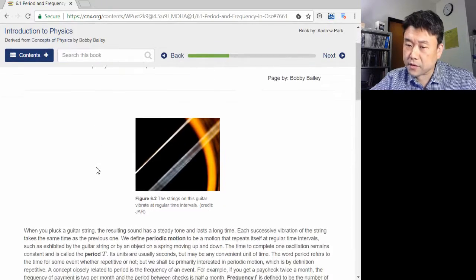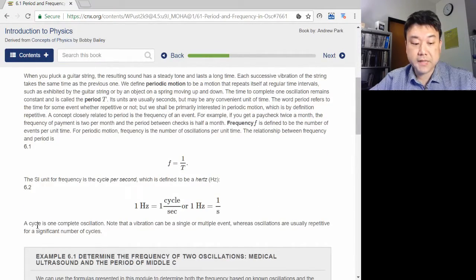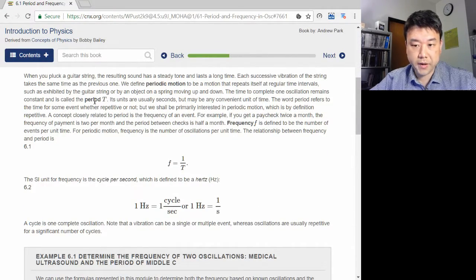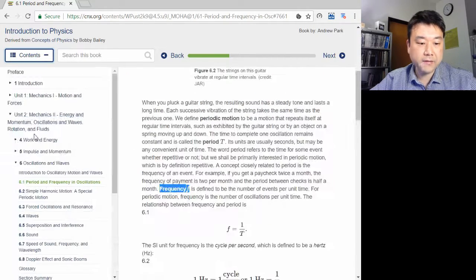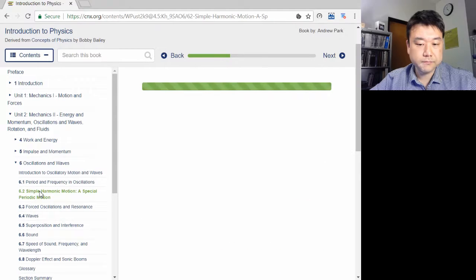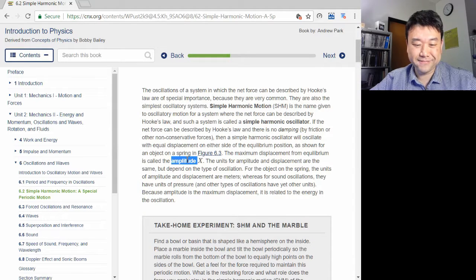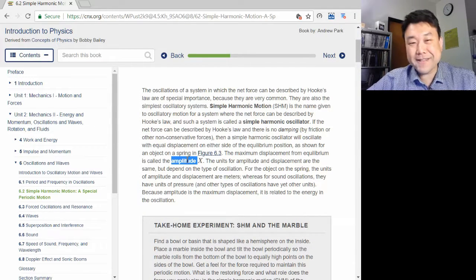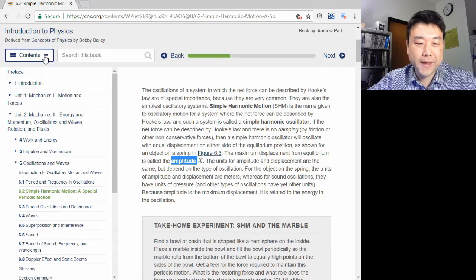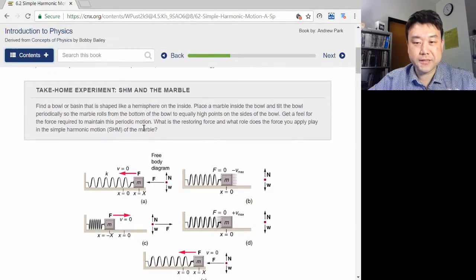We will have to define some new vocabulary to help us do that. You will have seen some of these words before: cycle, period, frequency, and amplitude. You could probably guess what they mean, but we are going to give them precise definitions in this chapter.